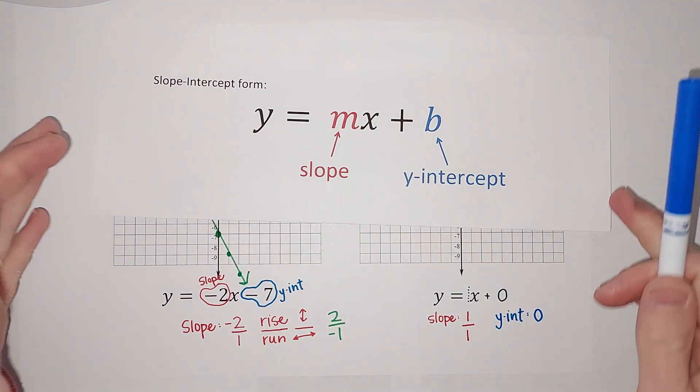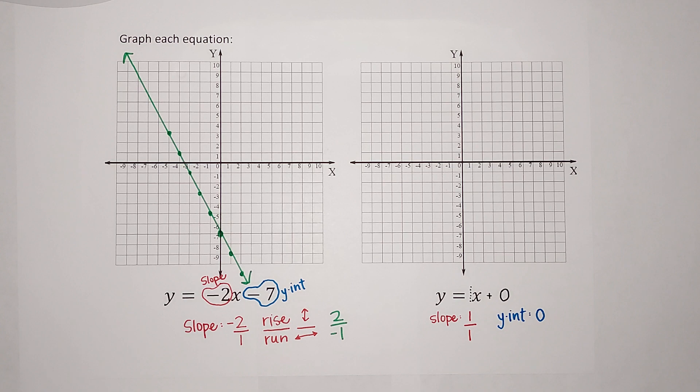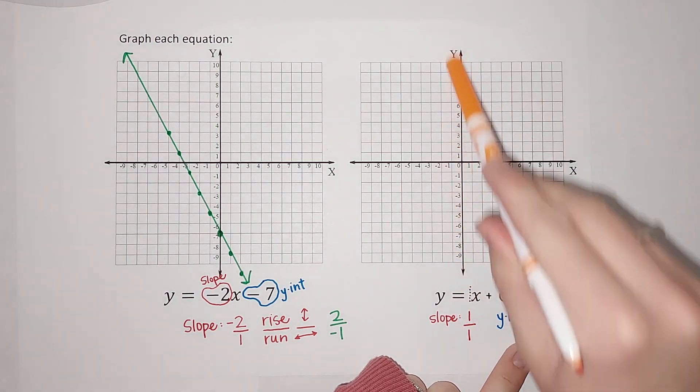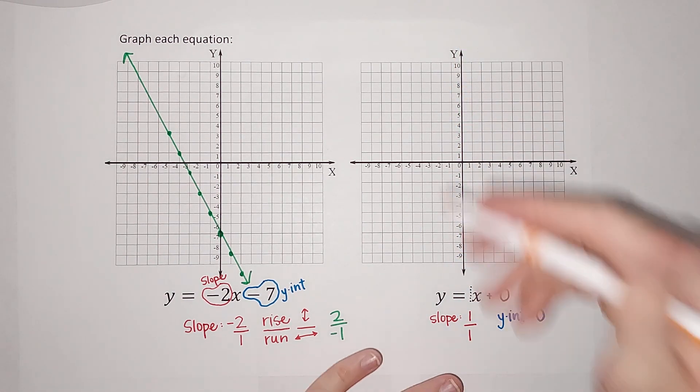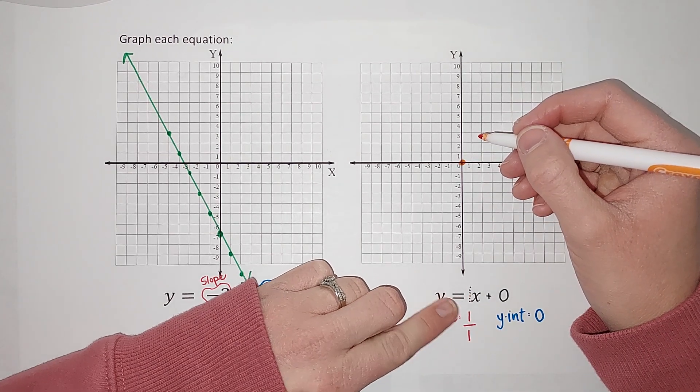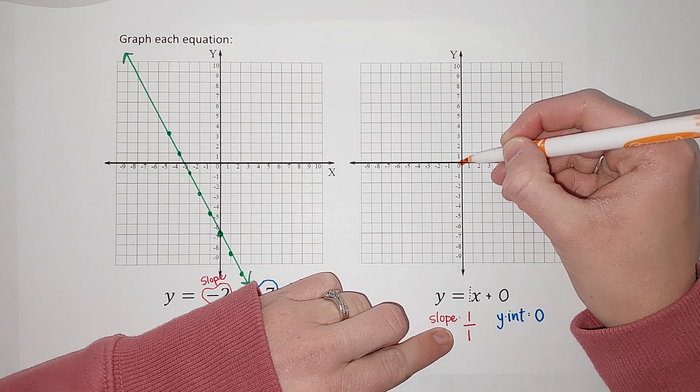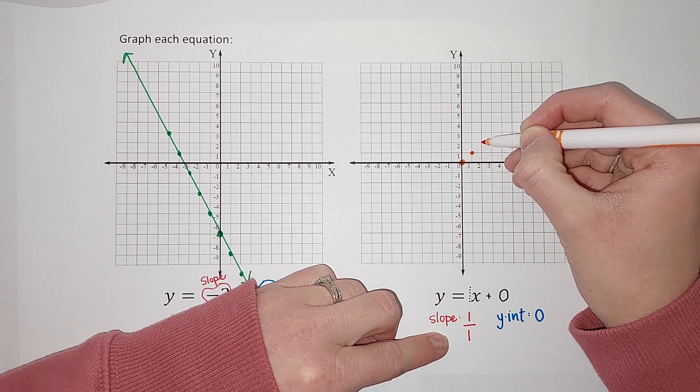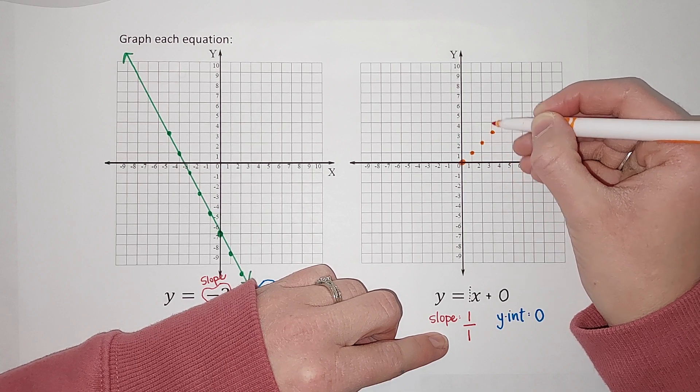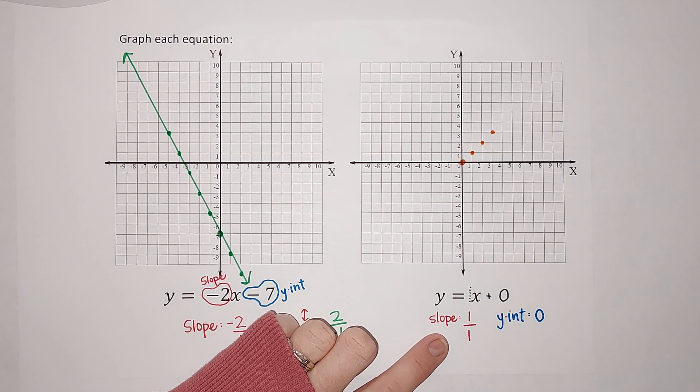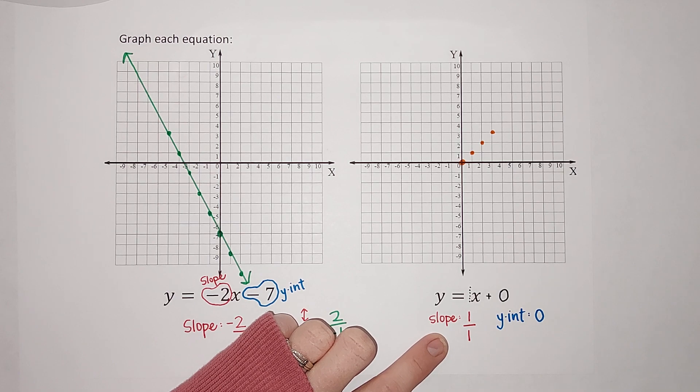So now let's graph this. So I'm going to use orange. We start with our Y-intercept. My Y-intercept is 0. So that means it crosses this line at 0, which is right here. My slope is 1 over 1. So since they're both positive, I'm going to go up and right. So up 1 over 1, up 1 over 1, up 1 over 1. And I could keep going, right?